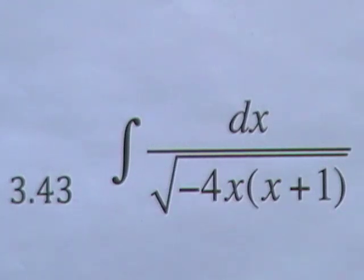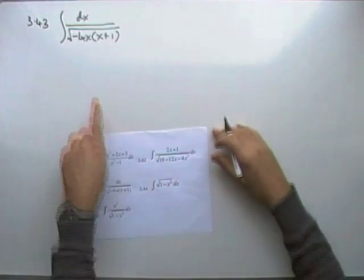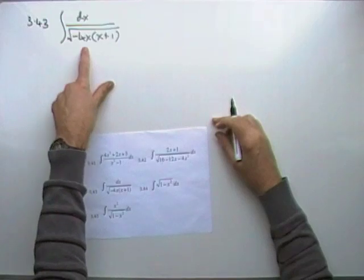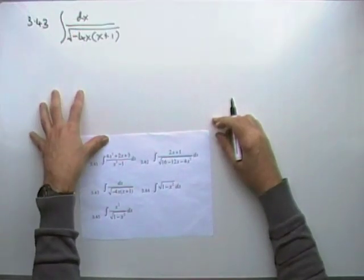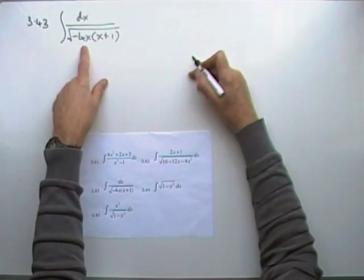So very quick one. Problem 342, this one. Well, it's just a case of sorting out the bottom. Notice there's no derivative on top, so hopefully this will just be some inverse sine straight away. We'll need to sort this out.